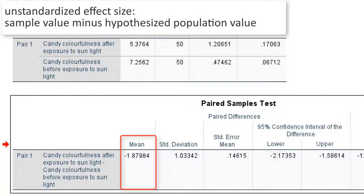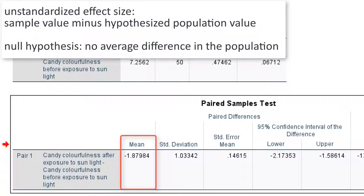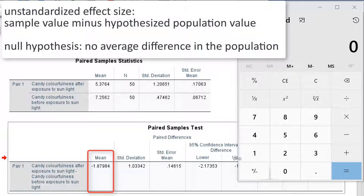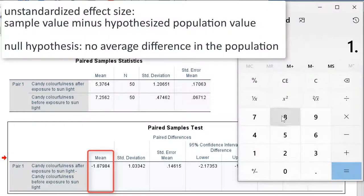As before, unstandardized effect size is the difference between what we find in the sample and what we hypothesize for the population. The implicit null hypothesis in a paired-samples t-test is that there is no average difference in the population. So, unstandardized effect size is minus 1.880, minus 0, which of course is minus 1.88. For short, the mean difference that we find in our sample is the unstandardized effect size.